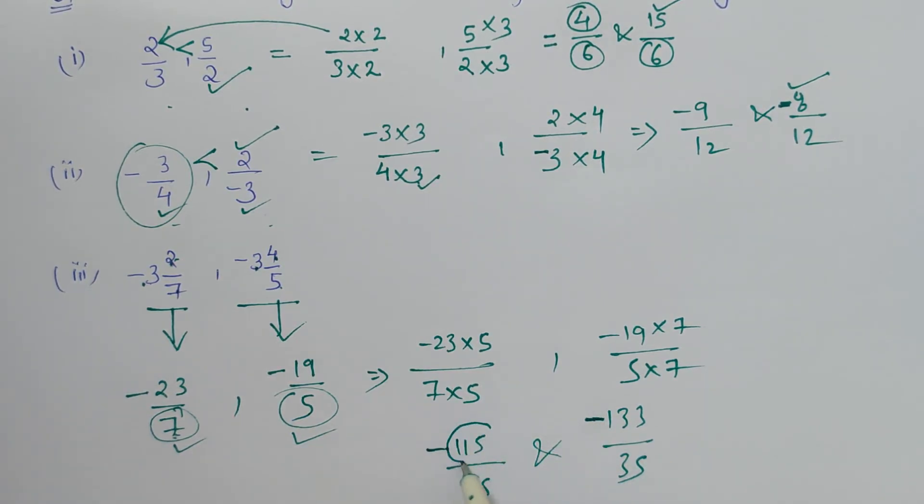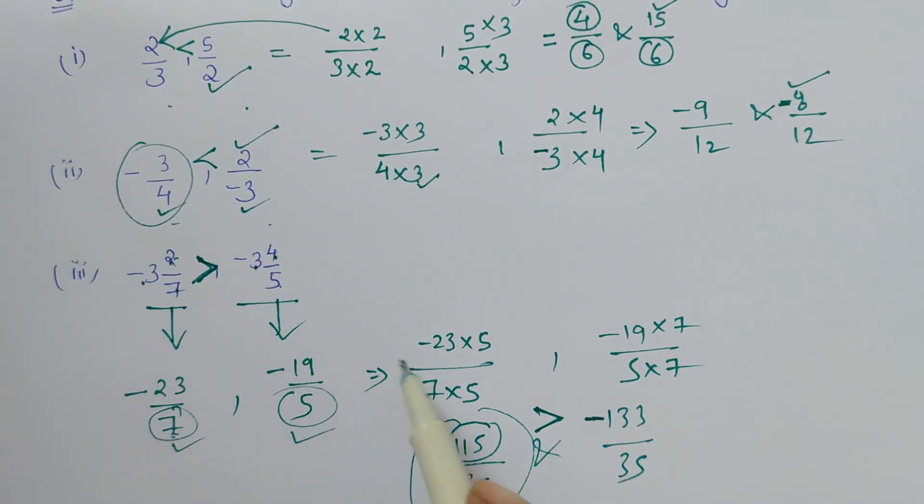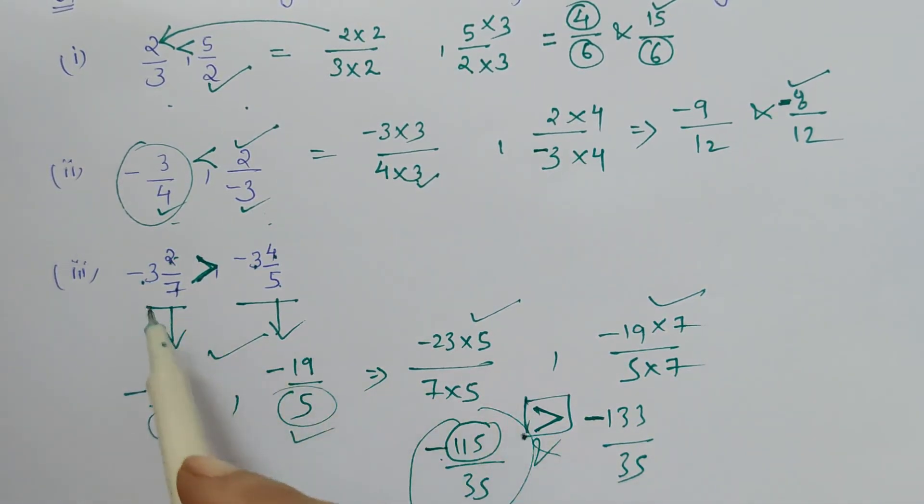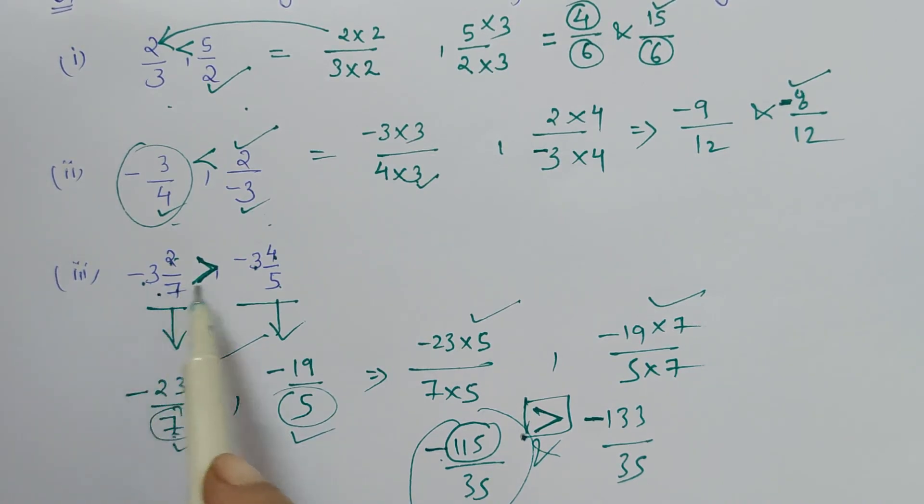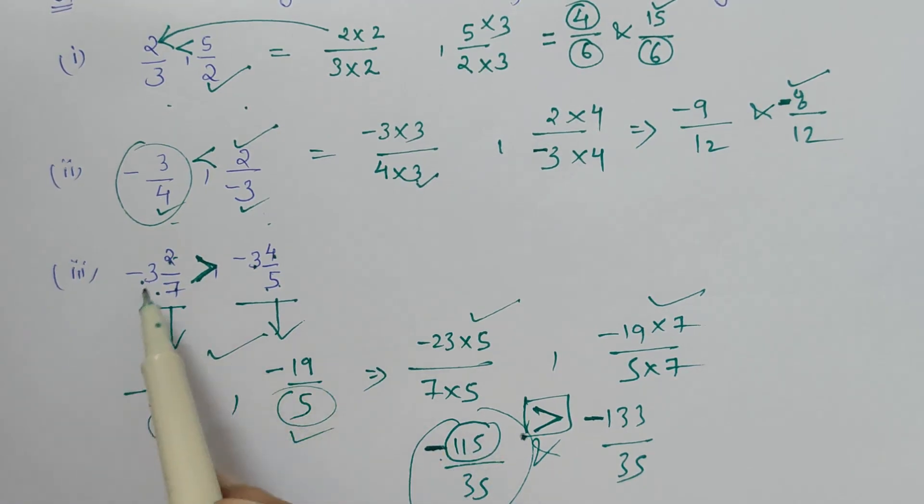So again here we have to see, as the numbers are negative, the smaller number with the negative sign is greater. So this is greater in this case. That means minus 3 and 2 by 7 is greater. Here I am showing you the intermediate step to get the result of inequality. So here we have seen that this mixed fraction is greater than this because this has a smaller number with negative sign, so this is smaller than this.